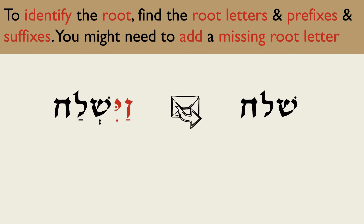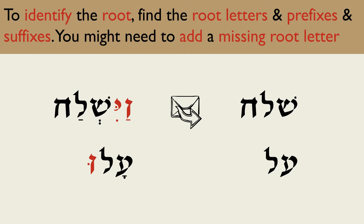In the verb Olu, the Vov is a suffix. The remaining letters are Ayin and Lamed. Thinking about the possible missing letters — Yud, Vov, Nun, or He — you find the common root Ayin, Lamed, He, meaning 'to go up.'